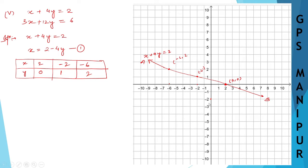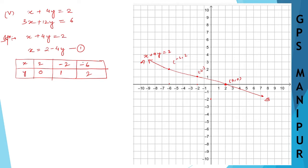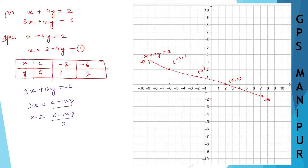Now let me change the color of my pen and write the next equation: 3x + 12y = 6. Rearranging: 3x = 6 − 12y, so x = (6 − 12y) / 3. Transferring 12y to the other side gives minus 12y on that side.